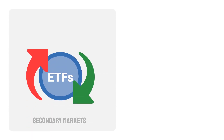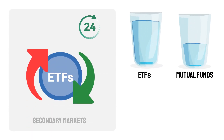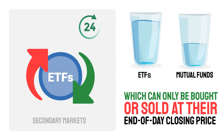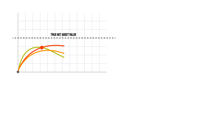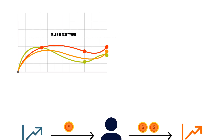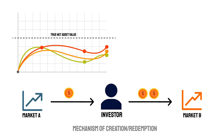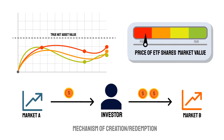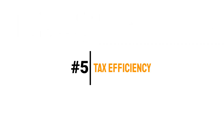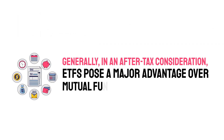Four: liquidity and price discovery. Because they can be bought or sold in secondary markets throughout the day, ETFs are more liquid than mutual funds, which can only be bought or sold at their end-of-day closing price. They usually trade close to their true net asset value, as their mechanism of creation and redemption constantly balances out the arbitrages in pricing, continually bringing the prices of ETF shares back to fair market value.